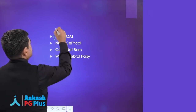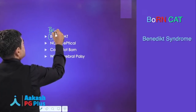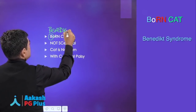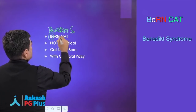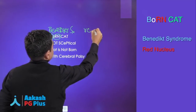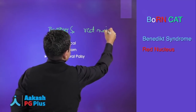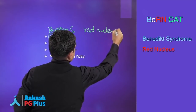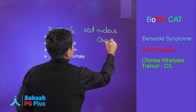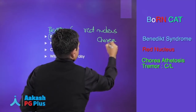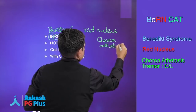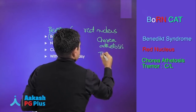Here B is Benedict syndrome — please write that down. RN is the red nucleus; that's what gets affected in Benedict syndrome, and this patient will have chorea, athetosis, and tremor.